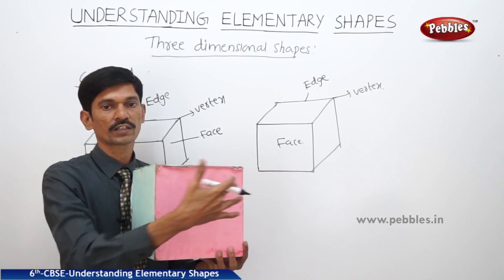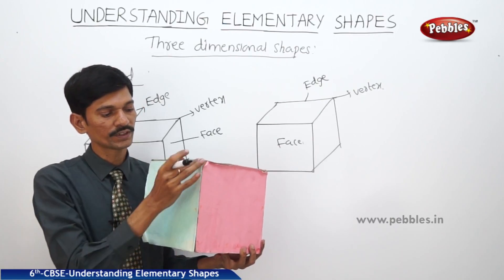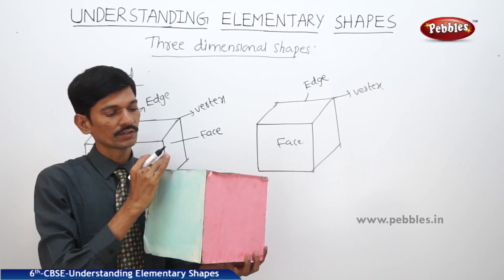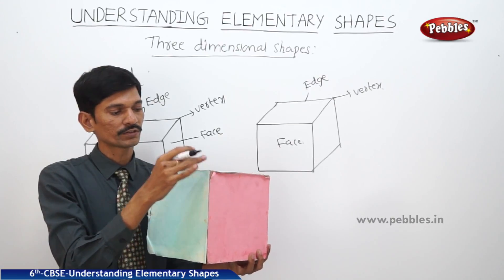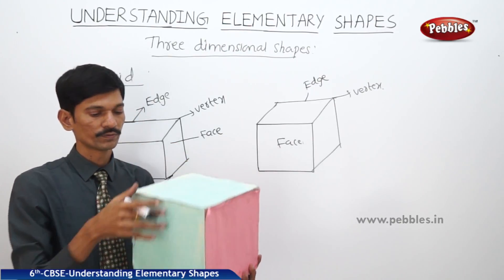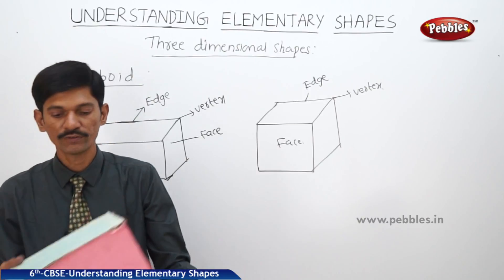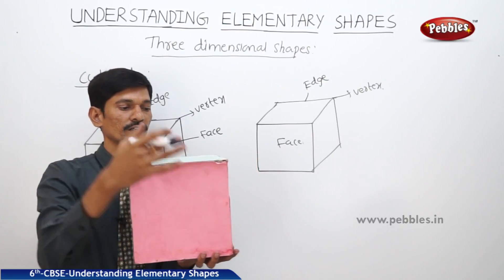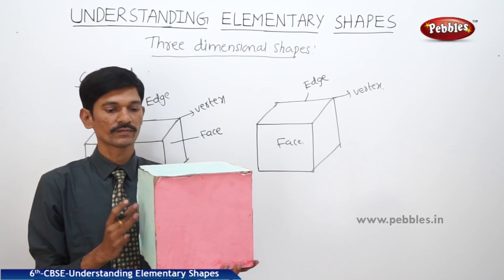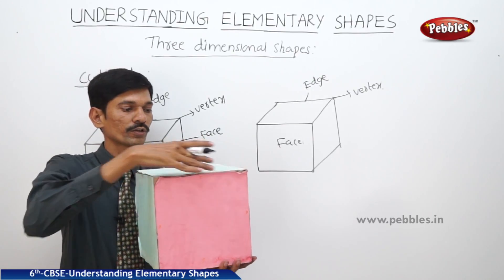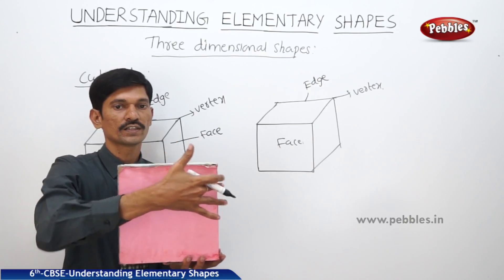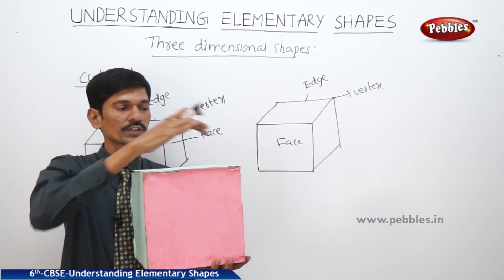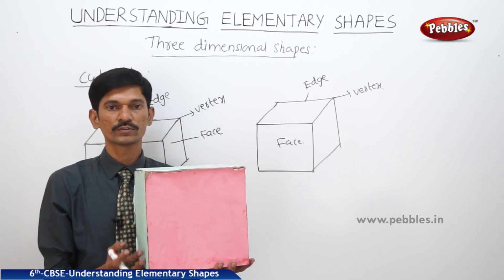The lateral faces of a cube are called faces, and where two faces meet in a line that is called an edge, and where two edges meet in a point that is called a vertex. A cube has six faces — four side faces plus the top and bottom. It has twelve edges — four on top, four on the bottom, and four on the sides. And it has eight vertices — four on top and four on the bottom.